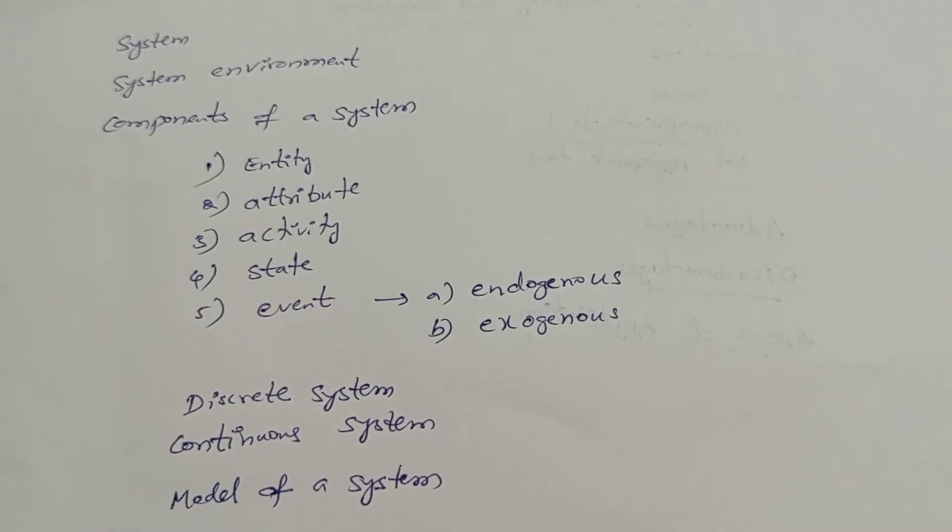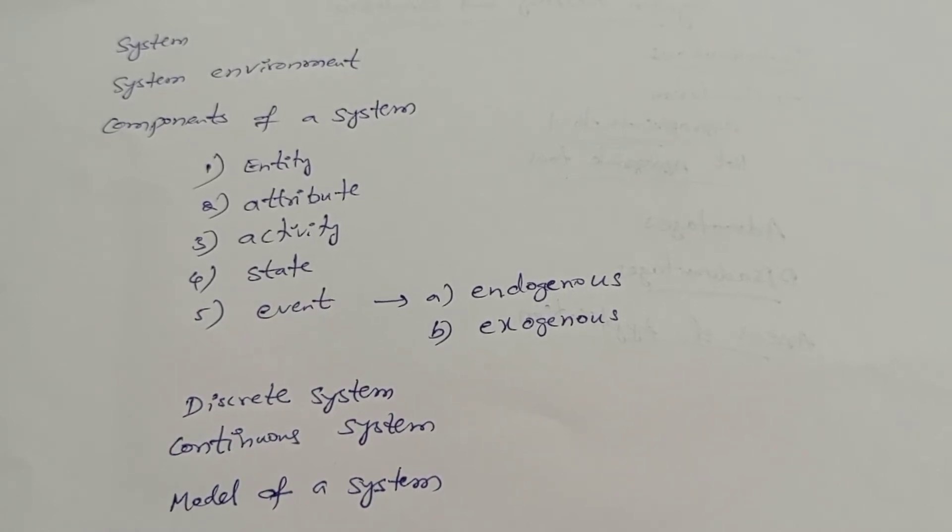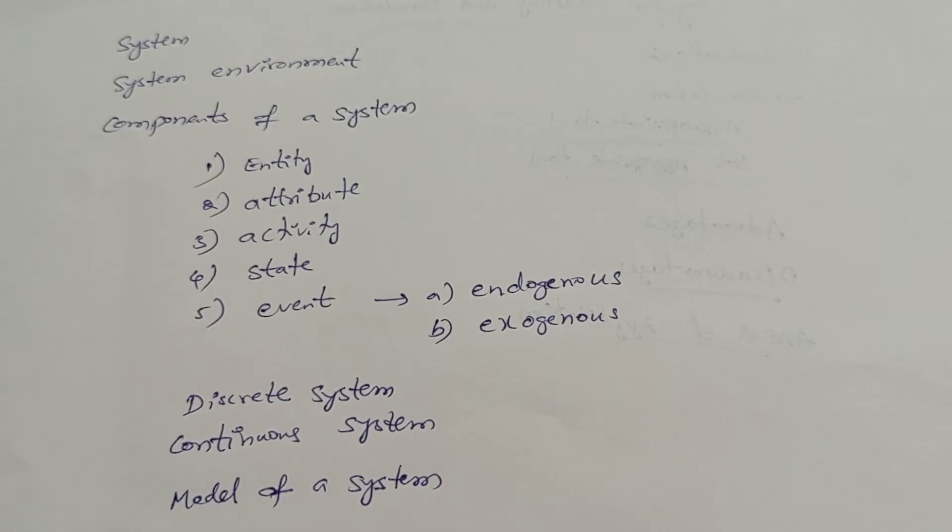Next, coming to state. State is a system defined to be that collection of variables necessary to describe the system at any time, relative to the objects of the study. For example, collection of variables that is necessary to describe.